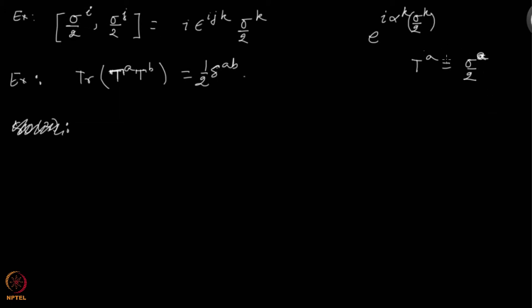I gave you for homework to check that if you look at commutators of these generators, the generators are half of Pauli matrices. Then the generators obey these commutation relations where epsilon_ijk is a completely antisymmetric matrix with epsilon_123 as 1.